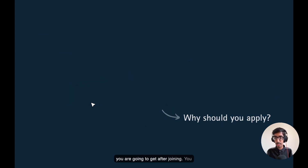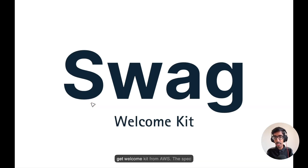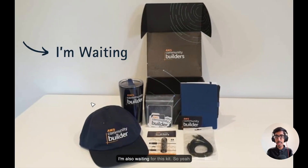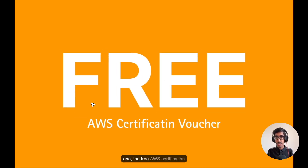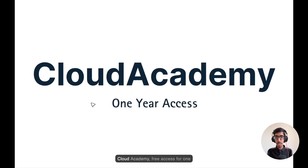Let's discuss the benefits of what you get after joining. You will get 500 AWS credits to use per year. Next, you get a welcome kit from AWS — the swag kit as you can see on my screen, and I am also waiting for mine. Next, there is a 4,000-plus AWS professional community of builders where you can connect and share your knowledge. You will also get a free AWS certification voucher.